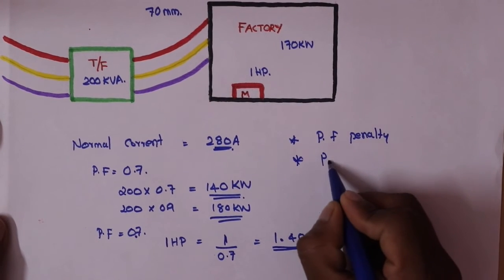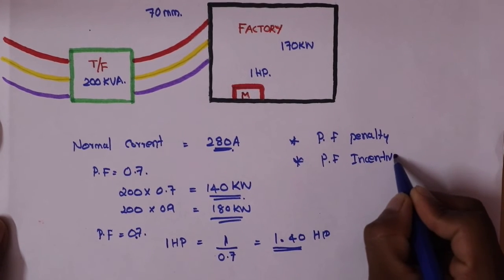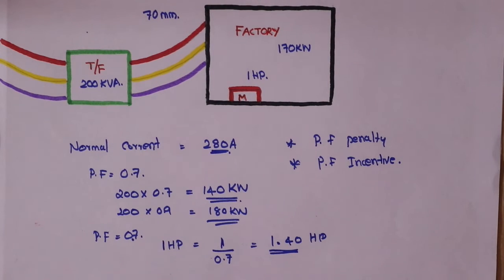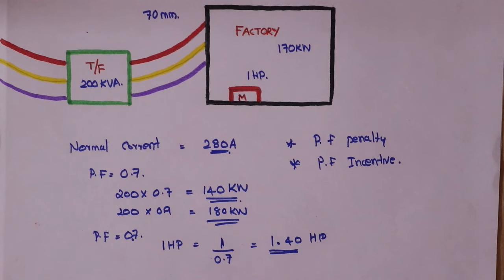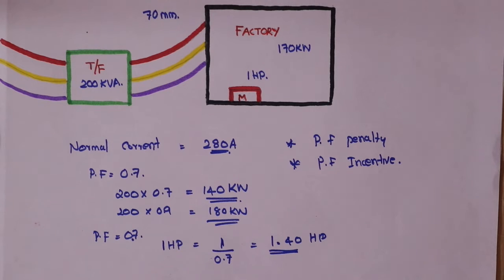That is Power Factor Penalty. That is Power Factor Incentive. In the video, we have to use a small unit amount. But if there is a large amount in an industry, there is a range set by electricity boards. In that range, we have a total penalty — that is a percentage of the power factor. If we have a power factor in range, we have to pay for a percentage — or earn an incentive.